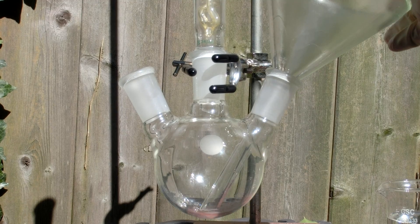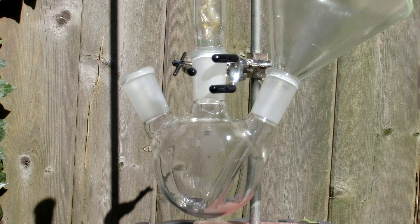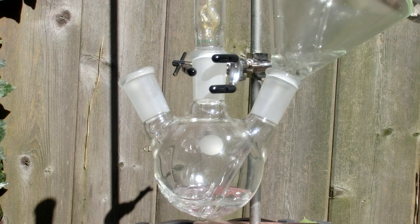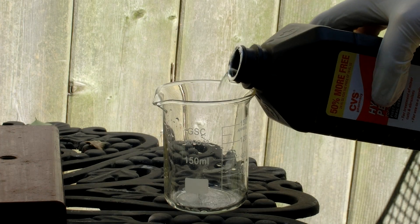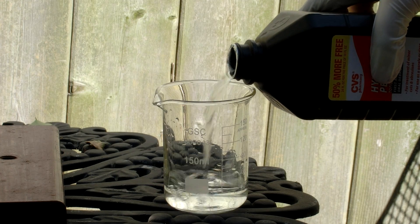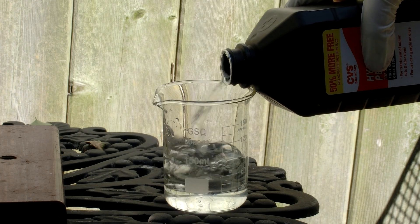Add this mixture to a round-bottom flask. Then measure out 120 milliliters of 3% hydrogen peroxide. Add that to the round-bottom flask.